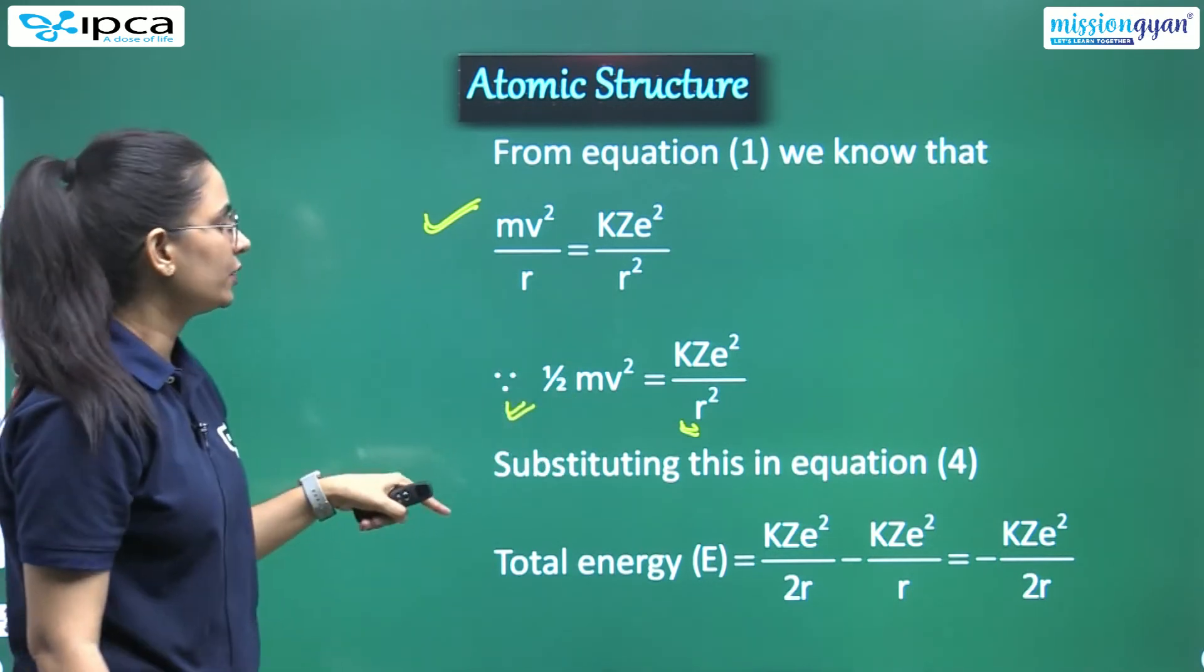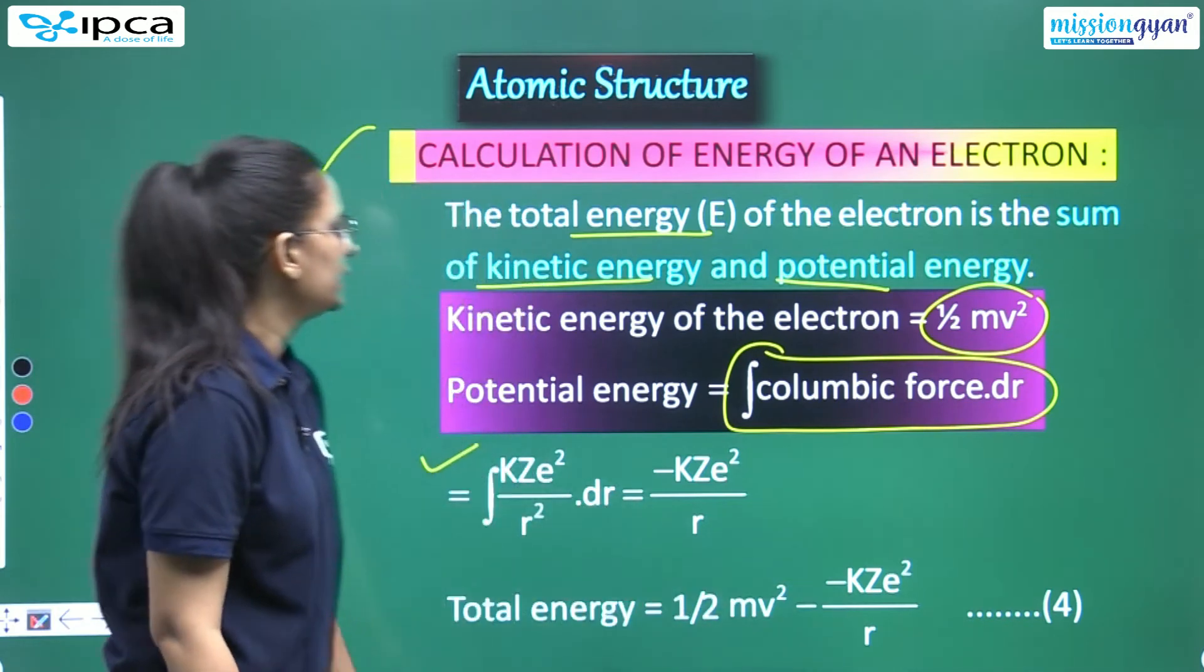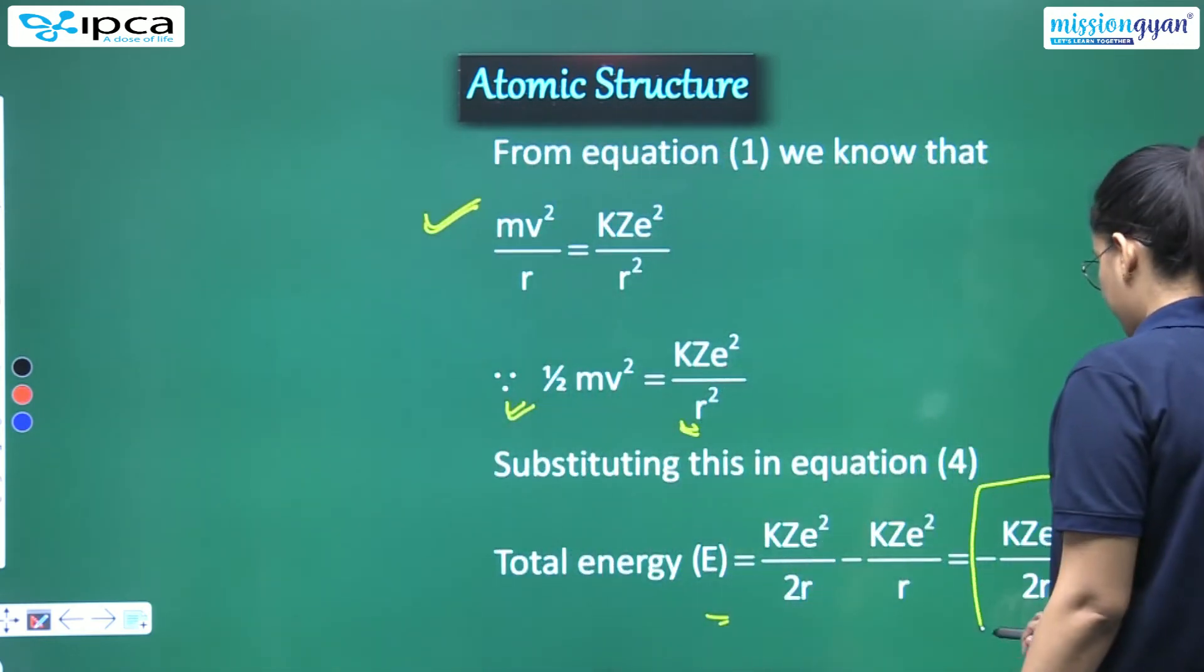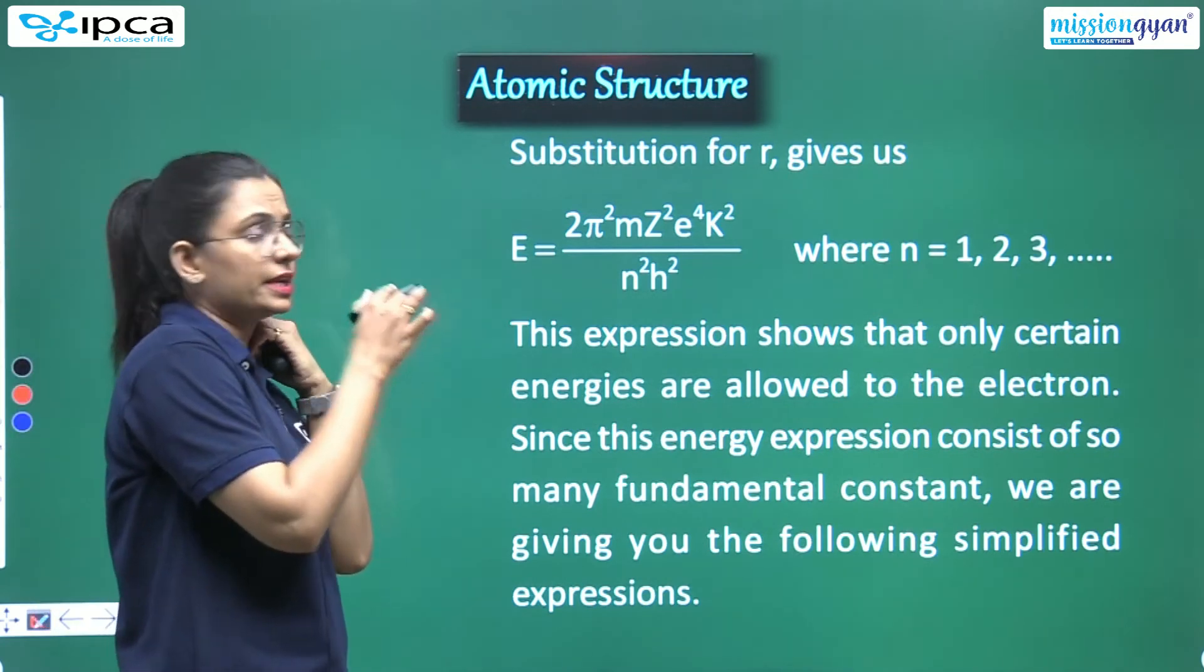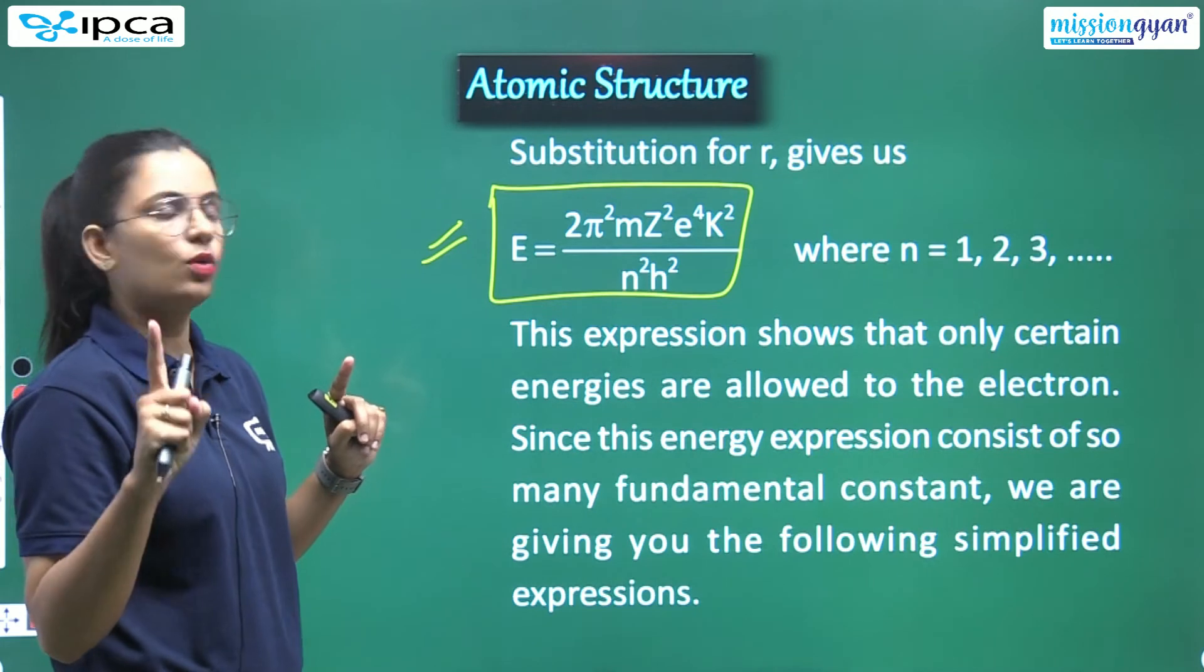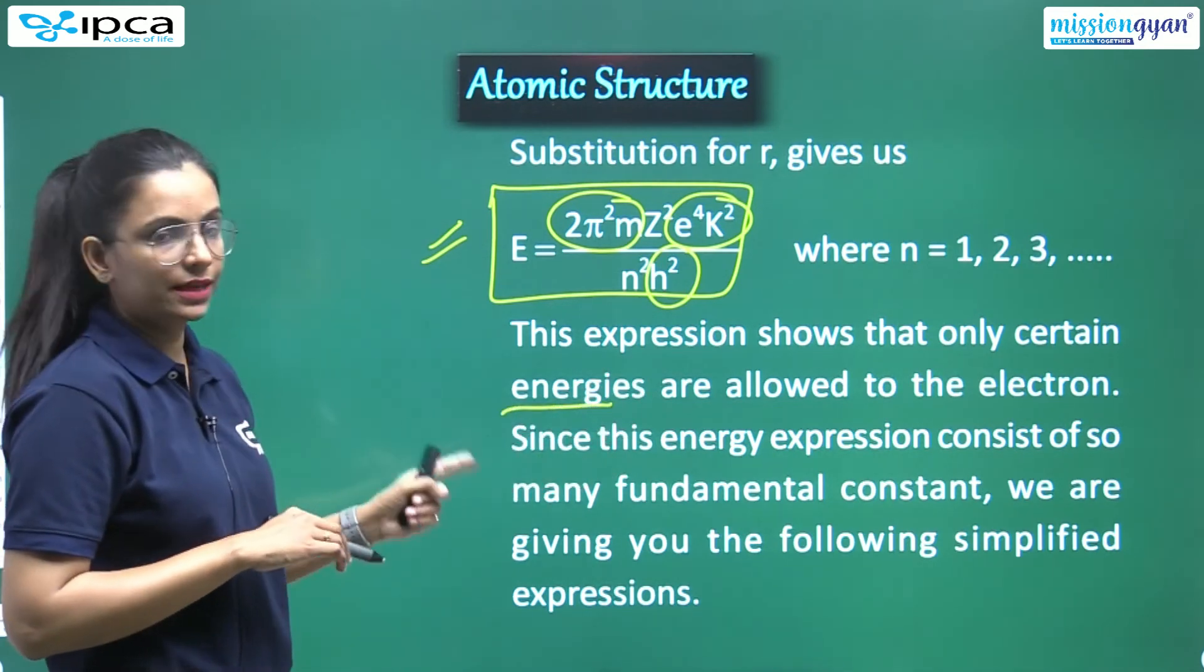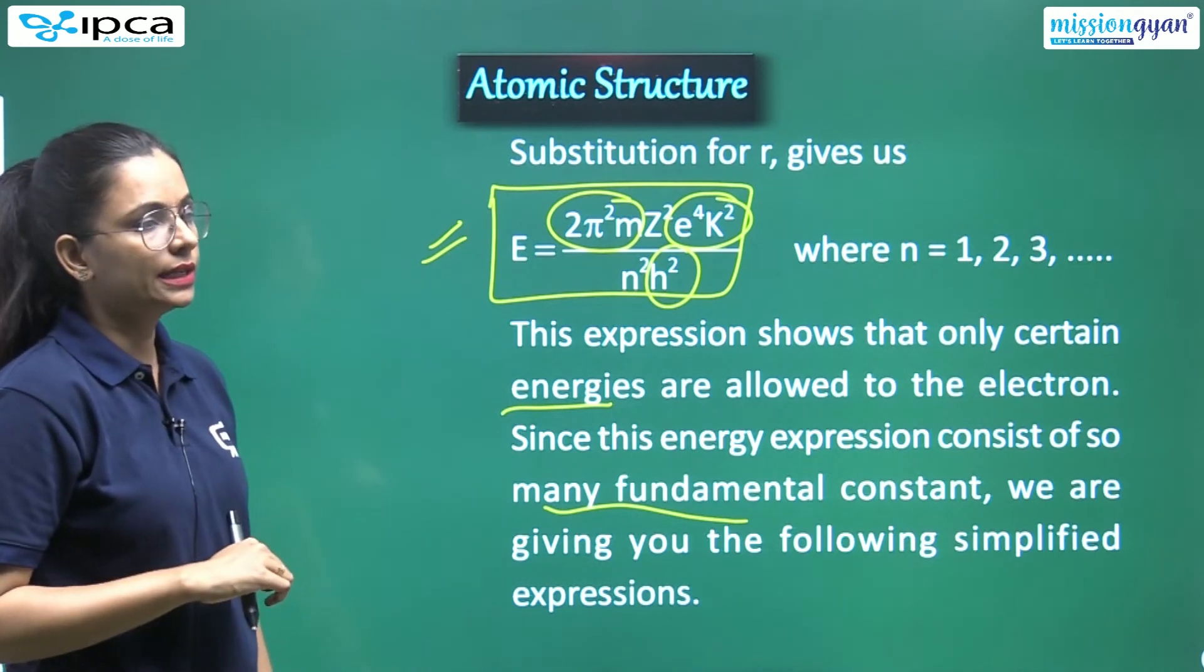Now we have to place these equations in the fourth equation. So what will your total energy be? See, this is the fourth equation, this is the same - put it in it. So you have the resultant: KZE square upon 2R minus KZE square upon R. From 2R, if you cross-multiply here, then the whole thing will come minus this: 1. Now we have to eliminate r's value. Again it's the same thing: eliminate r's value is equal to what has happened - this: 2 pi square MZ square E4 K2 upon N square H square. Now I know what will happen: 1, 2, 3 - all are constants. This is constant, this is constant, this is constant. What's left? Z square by N square. This expression shows that only certain energies are allowed to electrons, since the energy expression consists of so many fundamental constants. We are giving you the following simplified expressions.